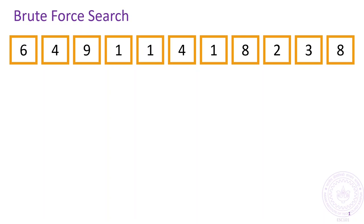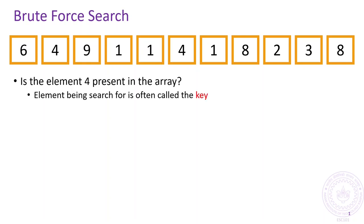I have this array with me that contains the amount of daily rainfall in the city of Kanpur. I want to find out if the city has received 4 cm of rainfall on any day or not. To do this, I need to find out if the element 4 is present in the array or not. We often say that 4 is the key that we are searching. So how should we go about doing this?